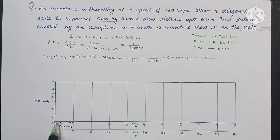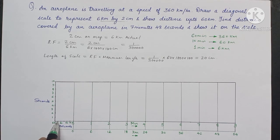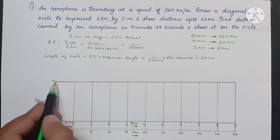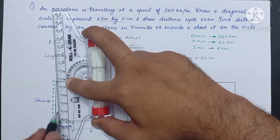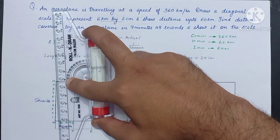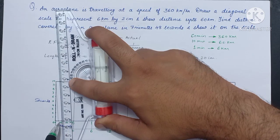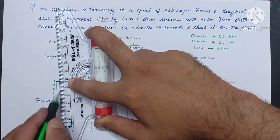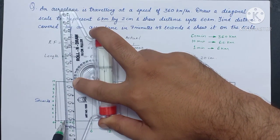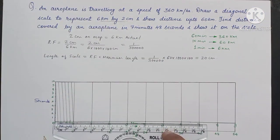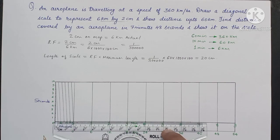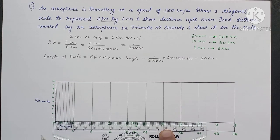Connect the second last point, that is 50 seconds, with point number 10, which will give an inclined line. Then draw parallel lines from each point. Match the roller scale with the horizontal line and draw horizontal lines from all these 10 points throughout the scale.